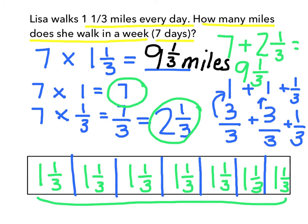Those were two examples of how you can multiply mixed numbers by whole numbers.